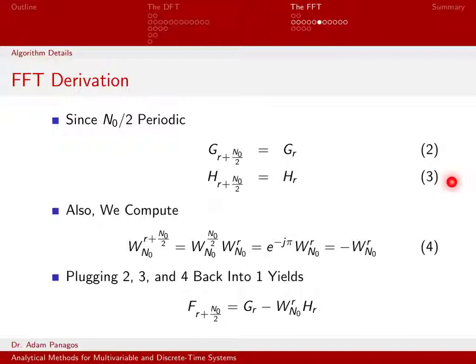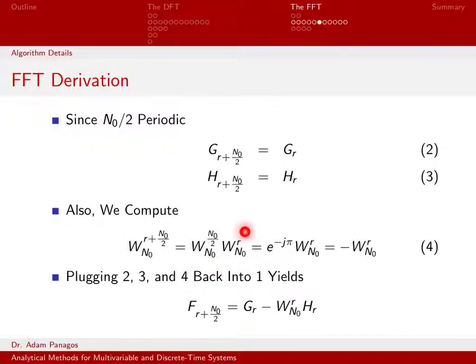Let's compute what w_{n_0} raised to the power of r plus n_0/2 is. I've taken r and tacked on n_0/2 to it. From here, we're just using the property of exponents — instead of writing it as a sum, I can write it as a product. Going back to the definition of w_{n_0}, that is defined as e^{-j2π/n_0}. If you raise that to n_0/2, you end up with e^{-jπ}.